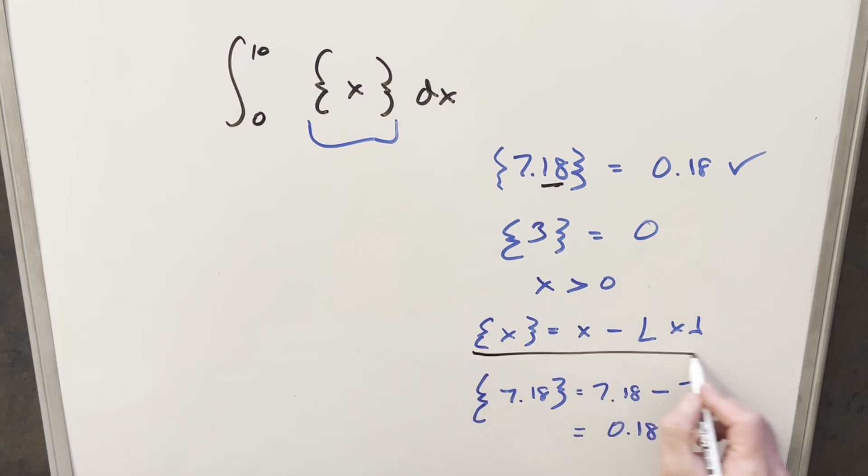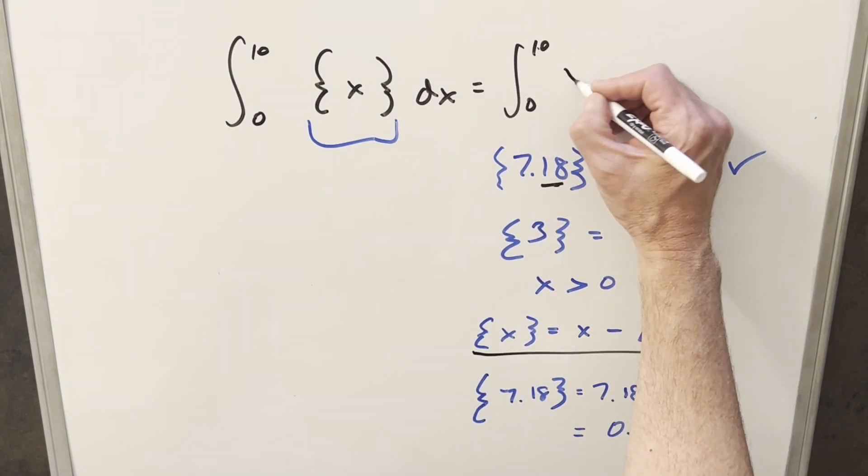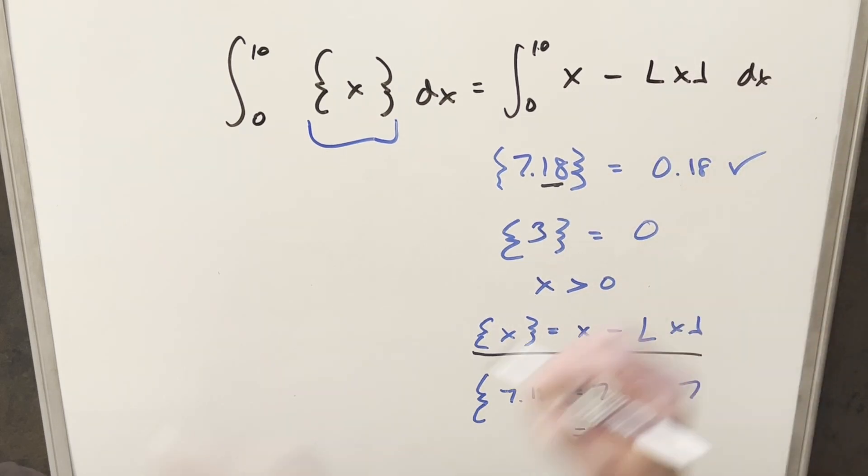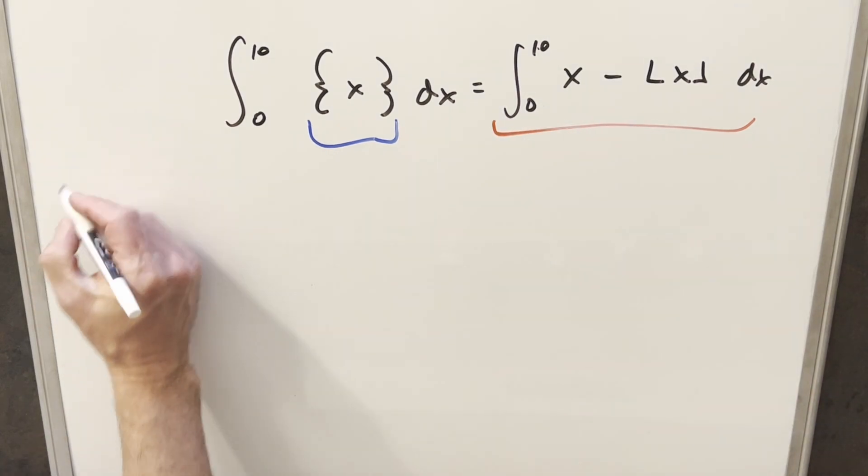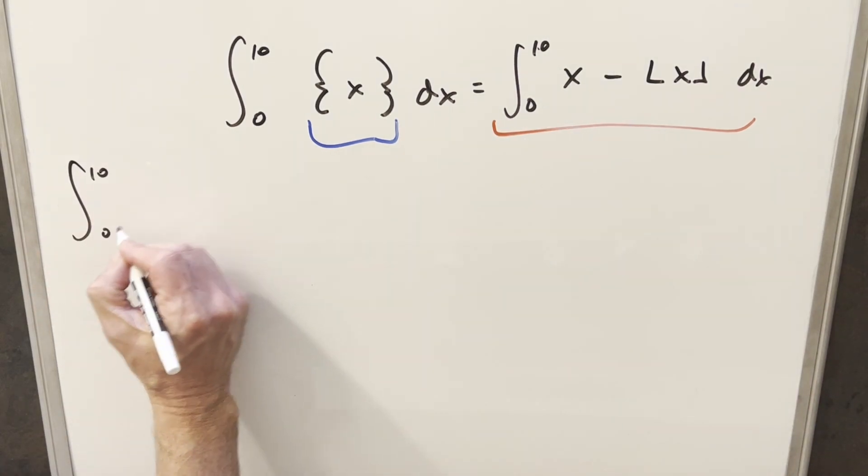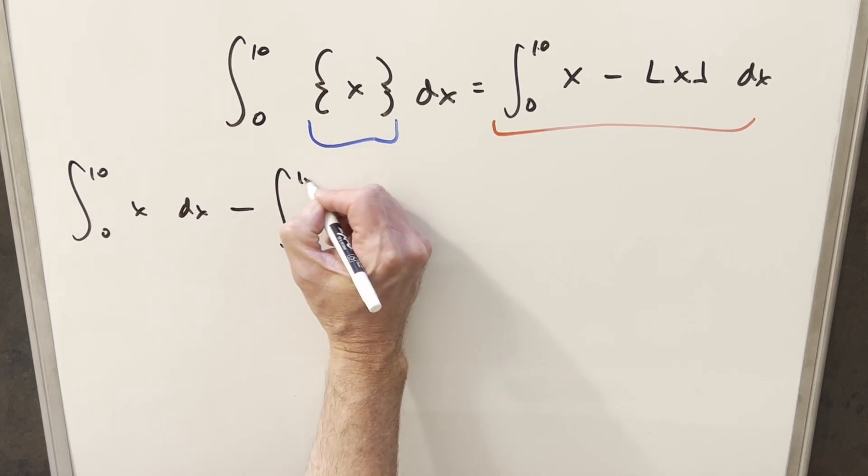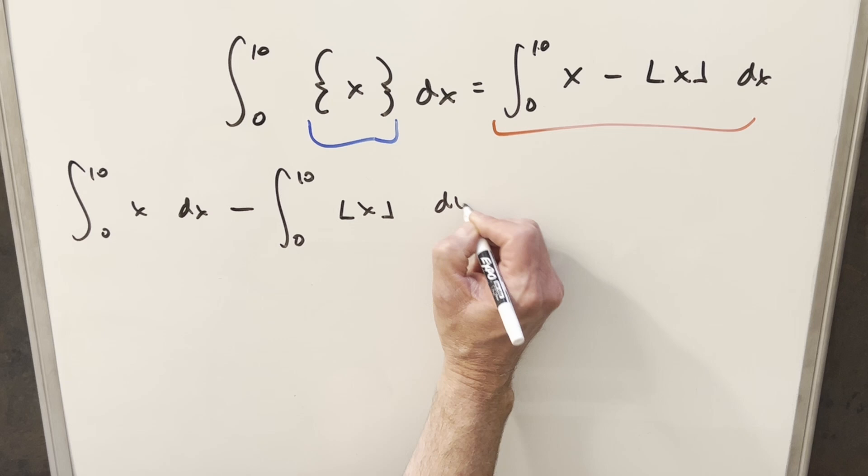So then let's just use this definition on the integral that we have. So what I can do is I can write this x minus the floor of x dx. But then from here, I can just take this and we can break this up into two integrals on the minus sign. So the first one is just going to become this integral of x dx. And the second one, we're just going to have the floor of x dx.